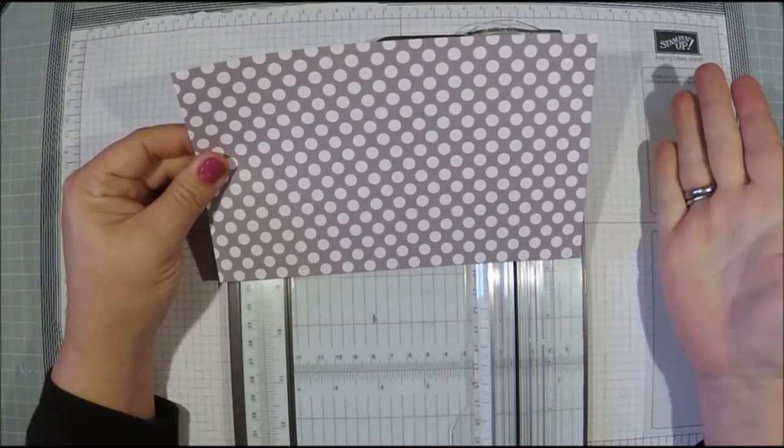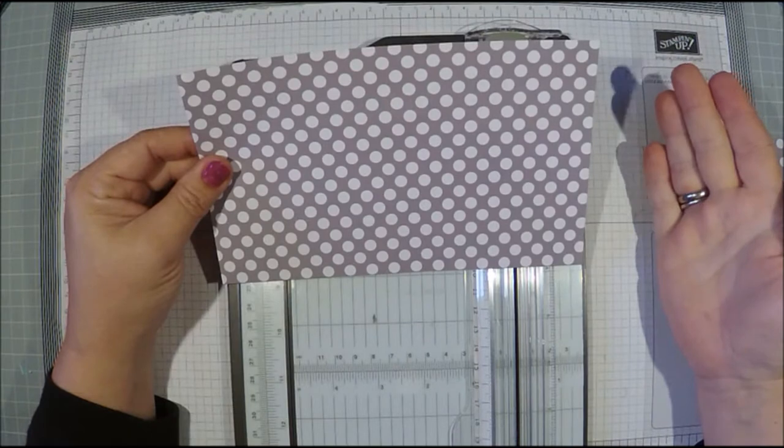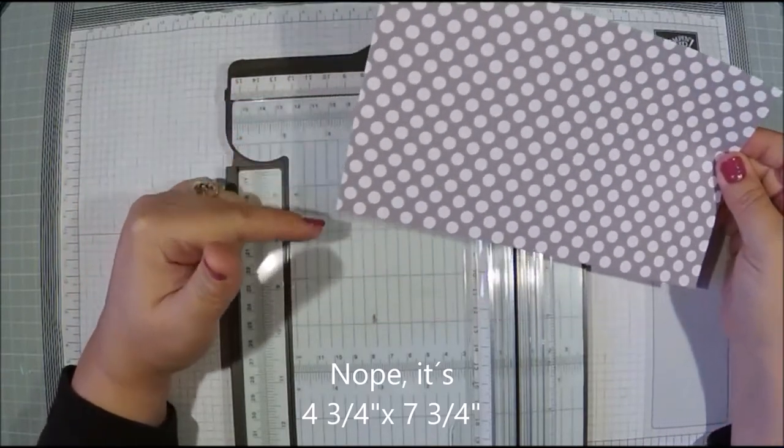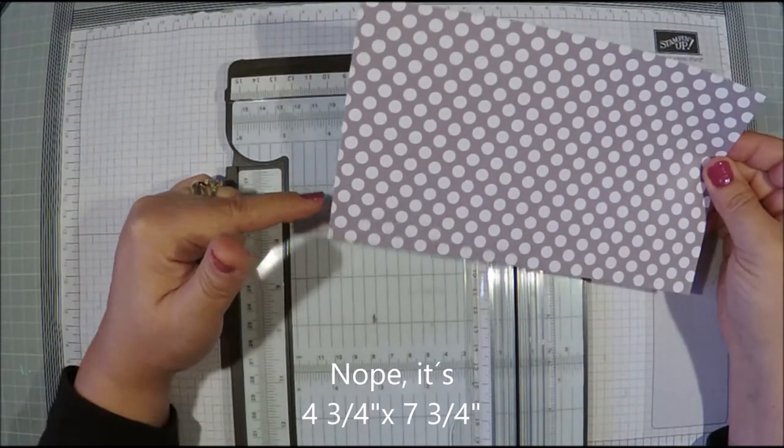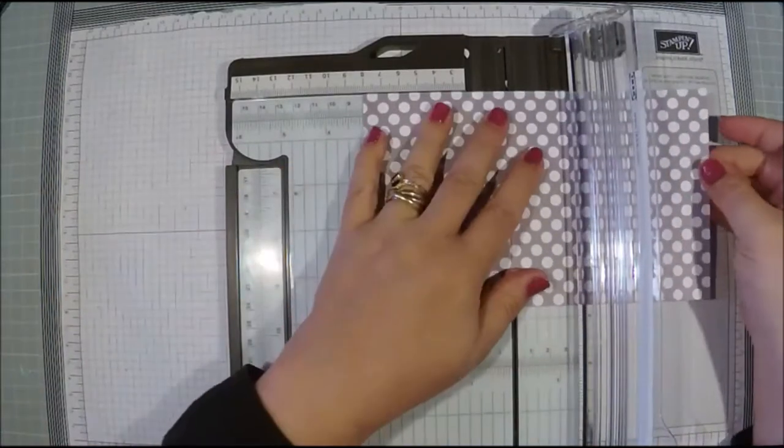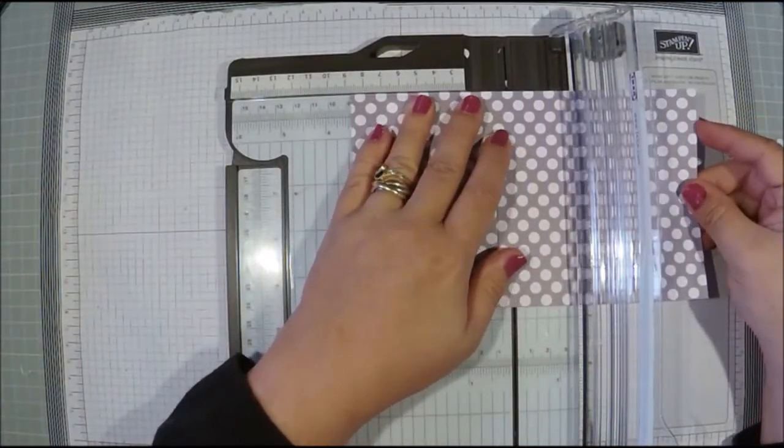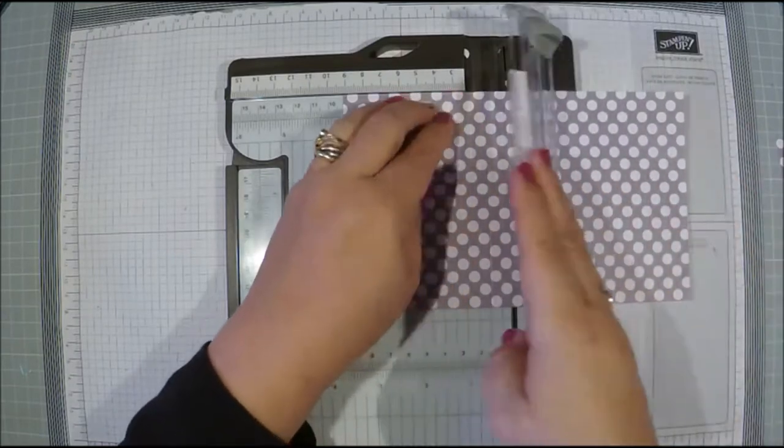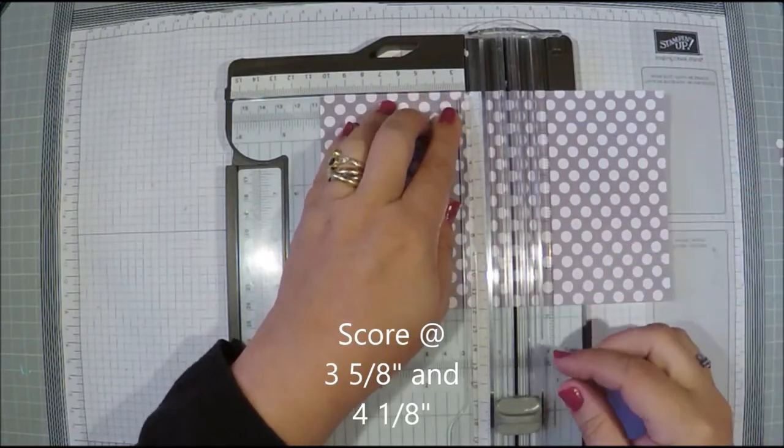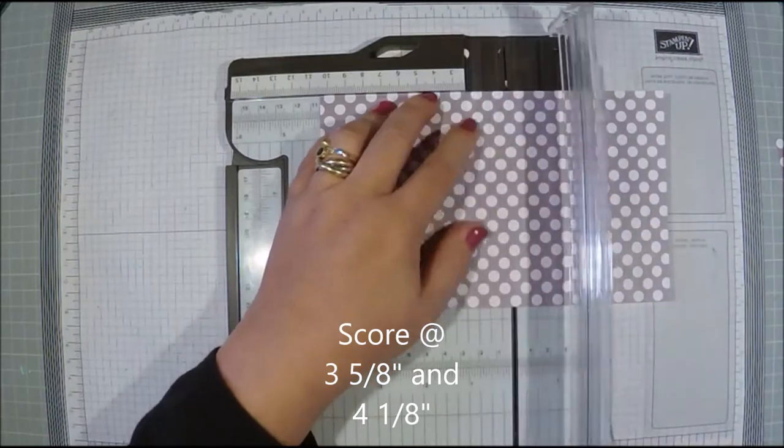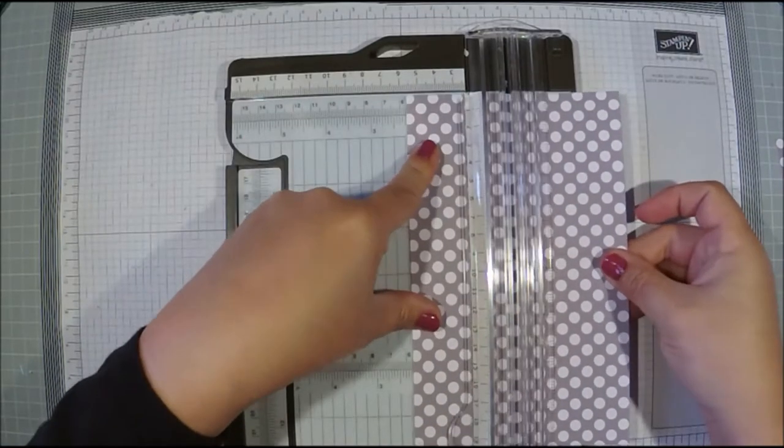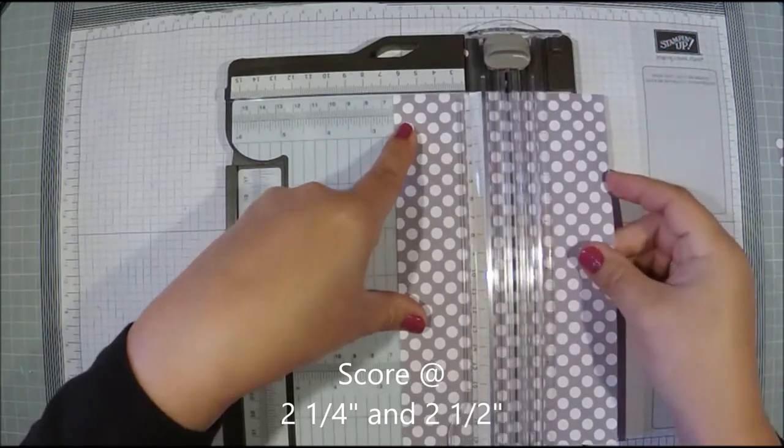I'm just giving you the measures I use so you can go ahead and start. You need a piece of paper, mine is seven and three quarters by three and three quarters. Mine is pretty flimsy so I'll be laminating mine. Landscape, you'll score that by three and five eighths, and four and an eighth. Portrait, you'll score this at two and a quarter and two and a half.